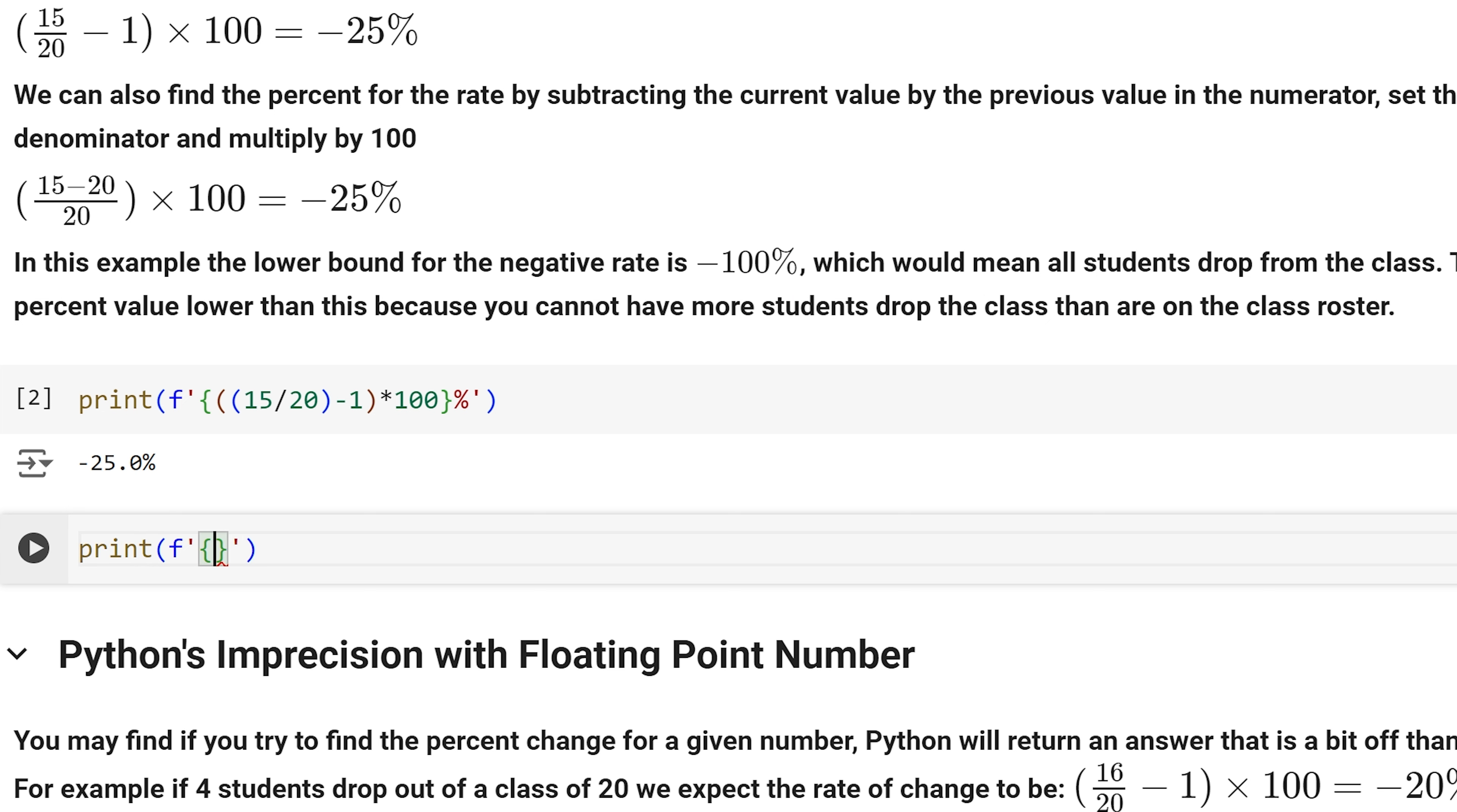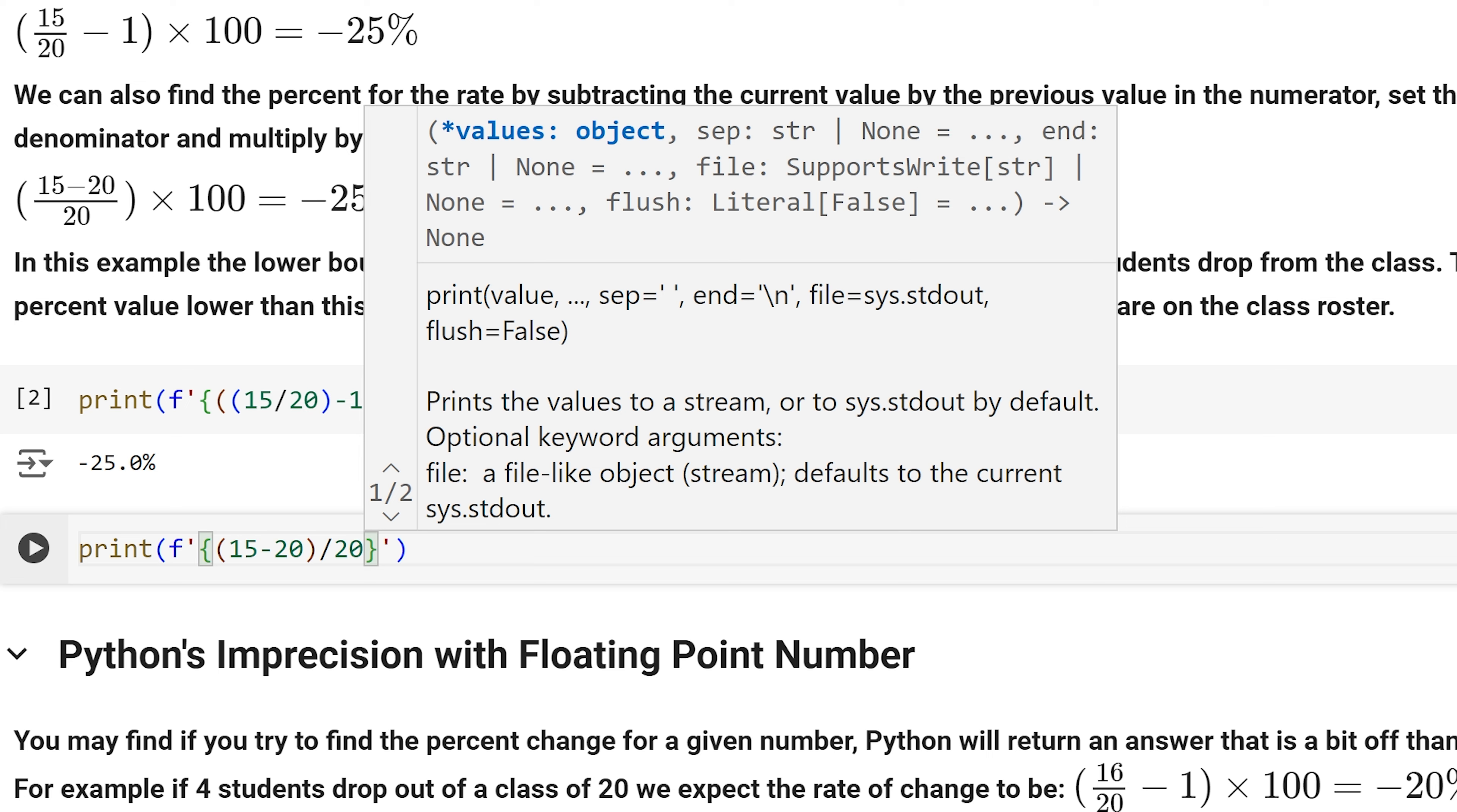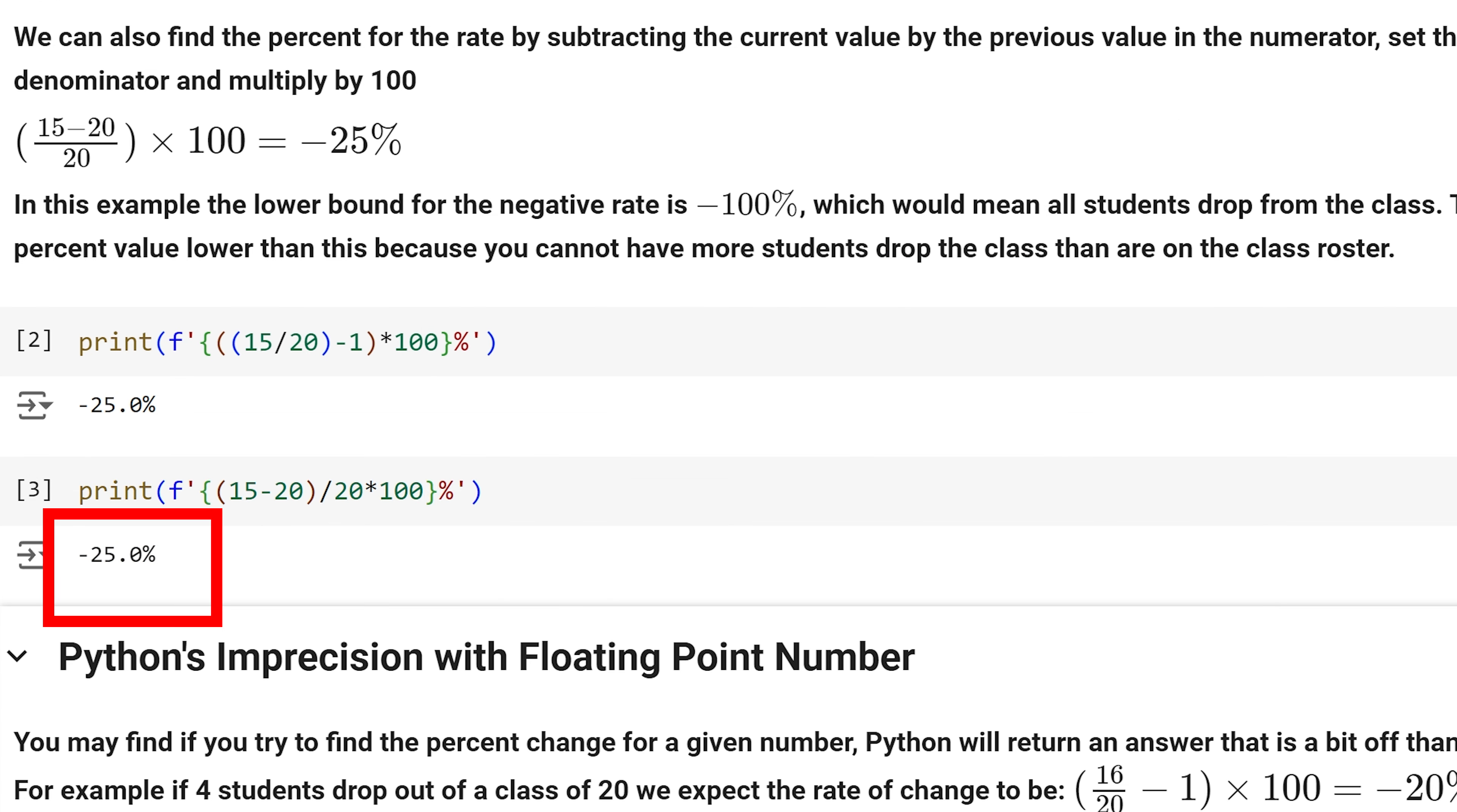Let us implement this in Python. In the numerator, be sure to include the difference 15 minus 20 within parentheses. And we have our expected rate of negative 25 percent again.